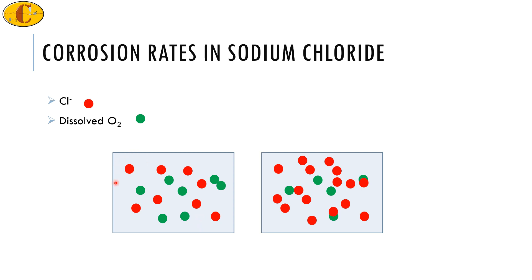In low concentrations of sodium chloride, you will have less of the chloride ions and more of the dissolved oxygen. As you increase the sodium chloride concentration, you will have more of the chloride ions.